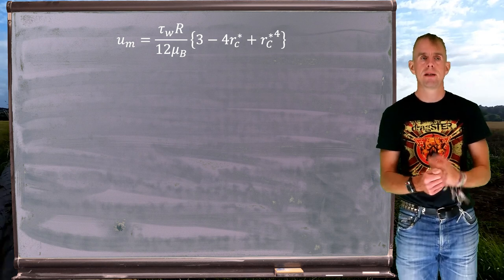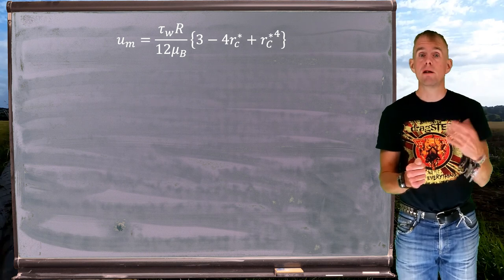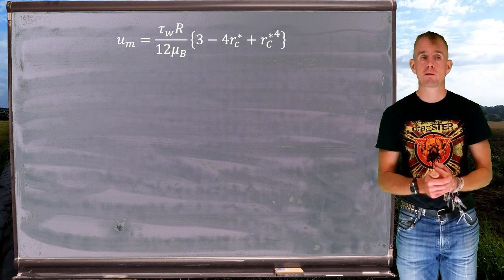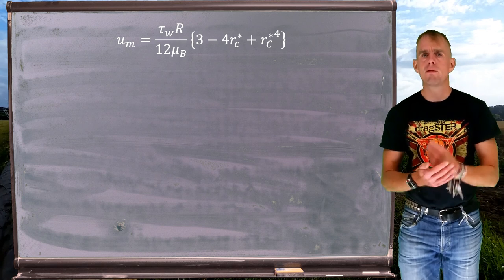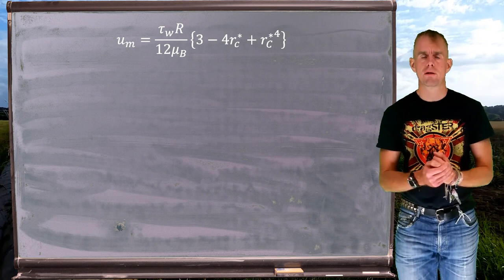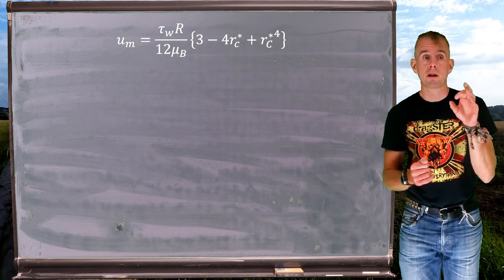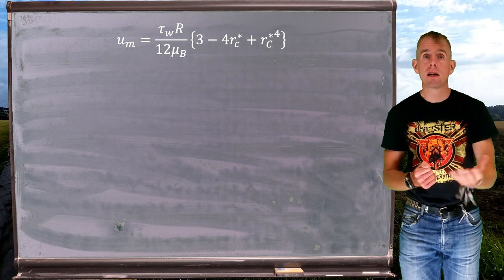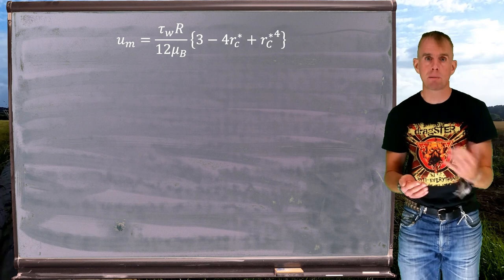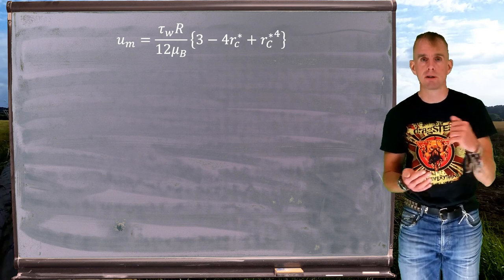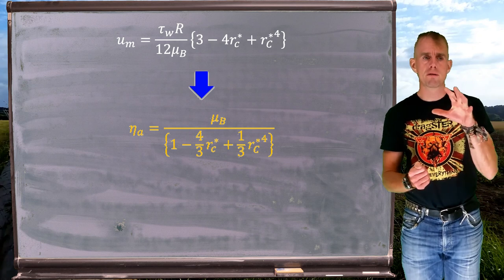The mean velocity is a group of terms involving some rheology — μ_B — the wall shear rate, the pipe geometry, and then this group of terms involving R_C*. What we're aiming for is a viscosity description. We have an expression from which we could write the wall shear stress τ_w, so all we need is to divide that by an expression for the wall shear rate γ̇_w. That will give us apparent viscosity: τ_w over γ̇_w.